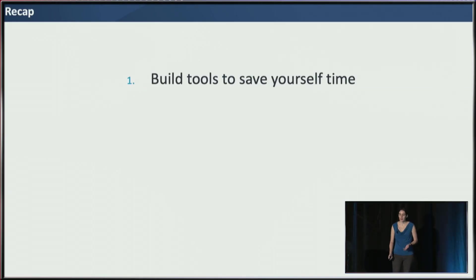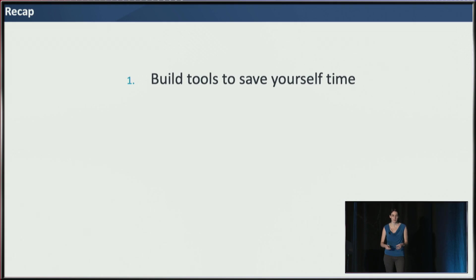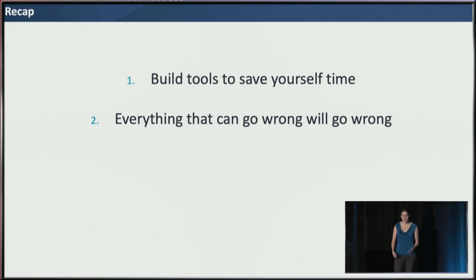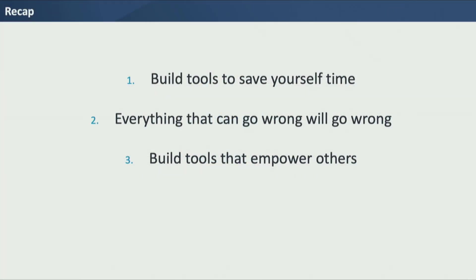In conclusion, to recap: build tools to save yourself time — that's where FunnelJoin came out. If you're finding yourself doing something over and over again, it's really worthwhile to invest time in making it easier, and it also enables analyses you wouldn't have started before because they'd be cumbersome. Everything that can go wrong will go wrong — you have to check your assumptions and build systems to do that. Build tools that empower others, especially effective dashboards. And finally, make it easy to do the right thing — the easier you can make it for people to follow best practices, the more likely you'll get the result you want.